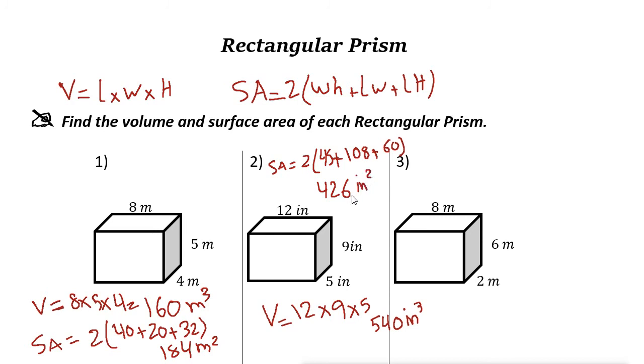Next one here. Volume is 8 times 6 times 2. So 6 times 2 is 12, times 8, it is 96, and the measurement is cubic meters.